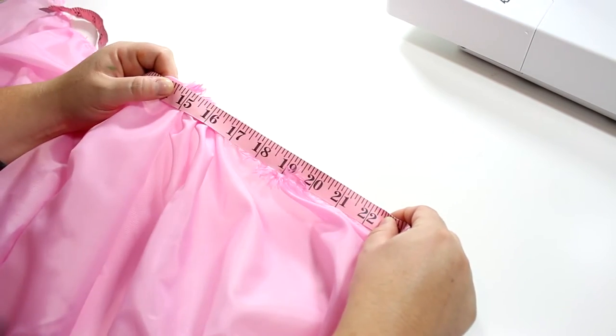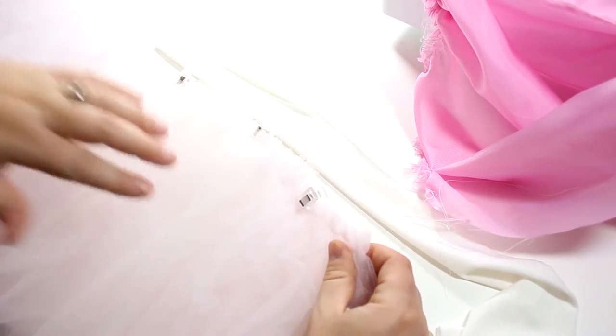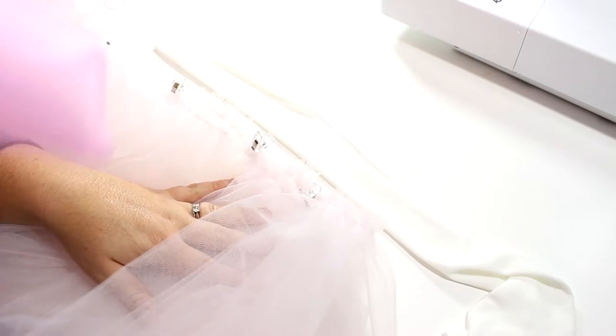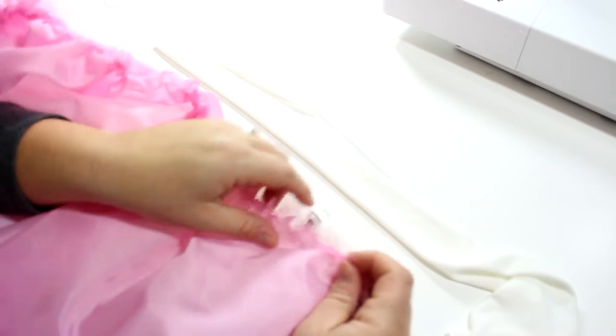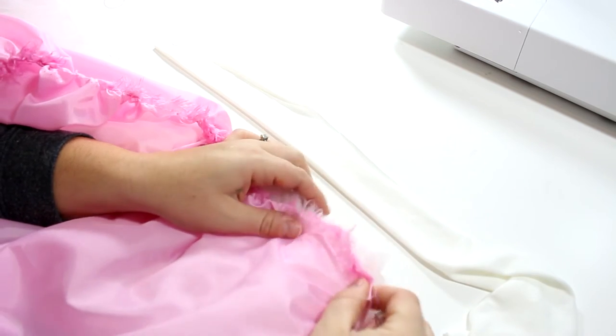Now we're going to take all the pieces and put them together. I have my tutu and then I'm going to put the lining along the waist and then I will attach my waistband which will be folded in half.